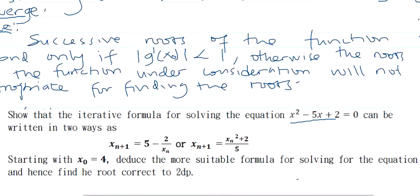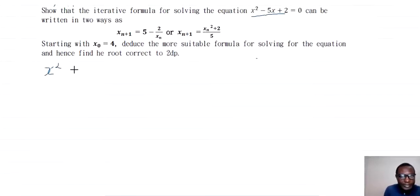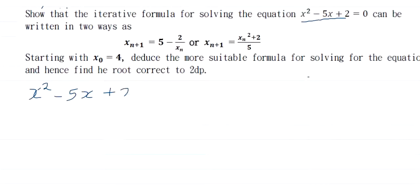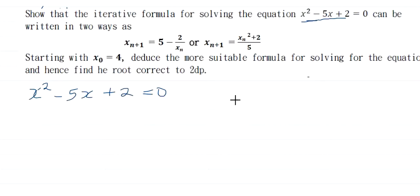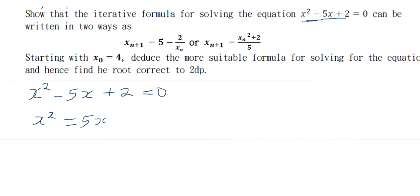We have been given x² − 5x + 2 = 0. To derive the first formula, take 5x and 2 to the other side: x² = 5x − 2.